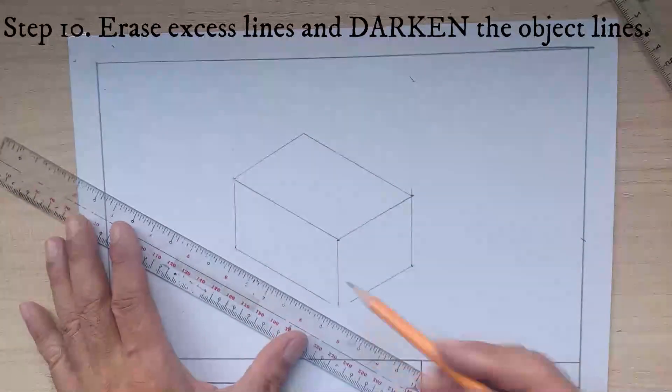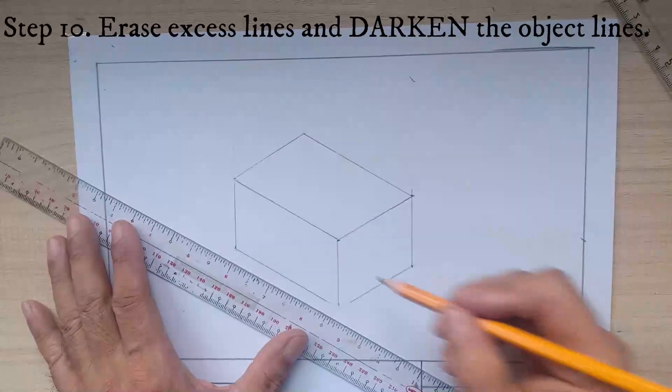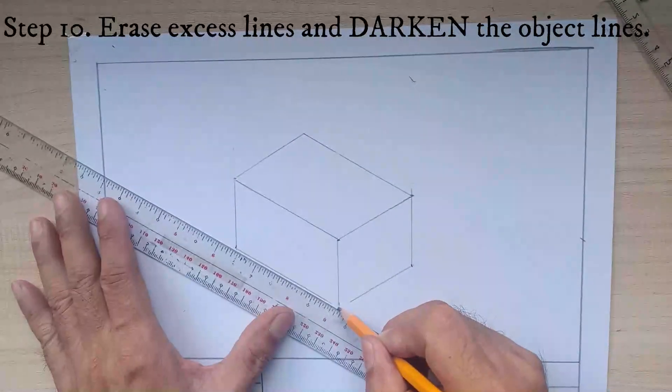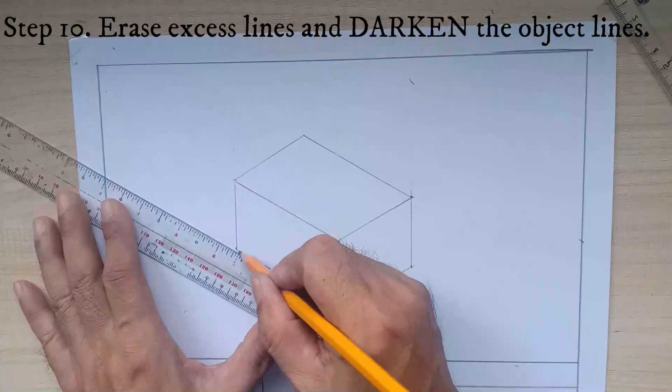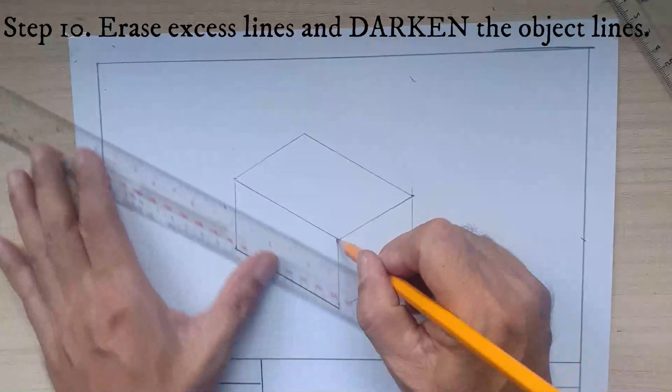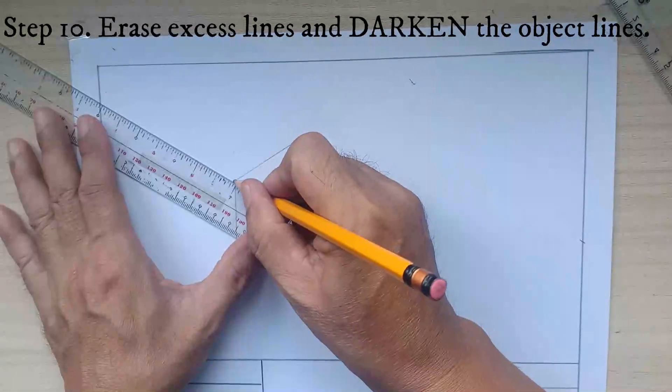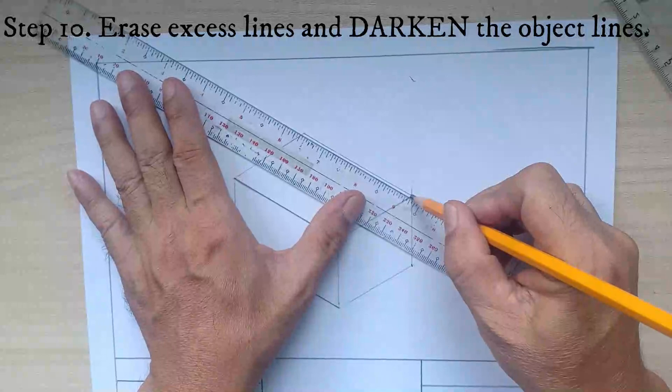To finalize the object, darken the object lines. The object line should be the darkest line among all aside from the borderline.